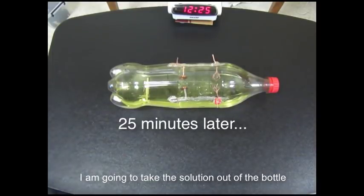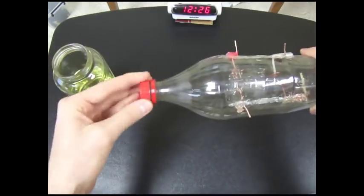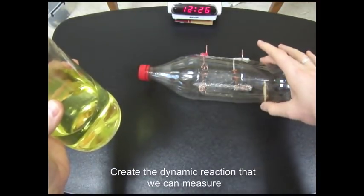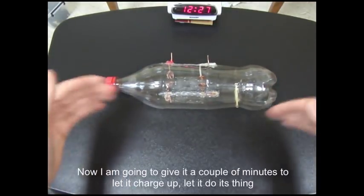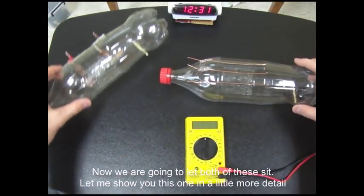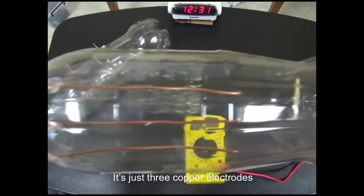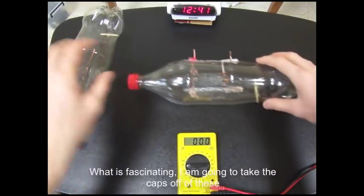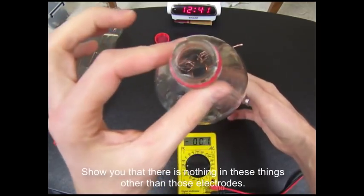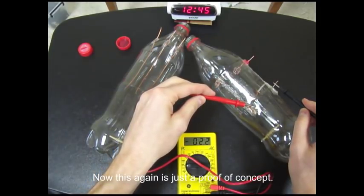I'm going to take the solution out of the bottle, creates the dynamic reaction that then we can measure. Now I'm going to give it a couple minutes to let it charge up, let it do its thing. So now we're just going to let both of these sit. I'll show you this one in a little bit more detail. It's just three copper electrodes. What's fascinating is I'm going to take the caps off of these, show you that there's nothing in this thing other than those electrodes. Now this again is just a proof of concept.